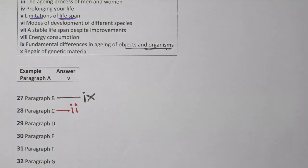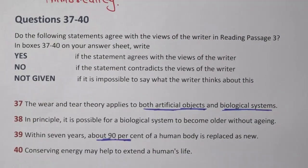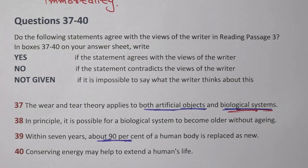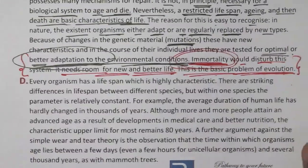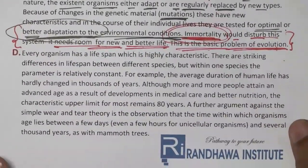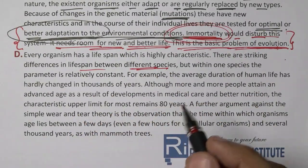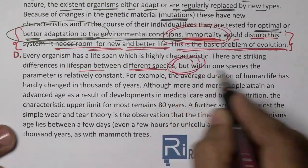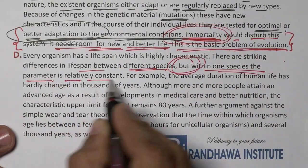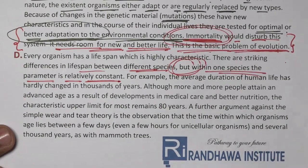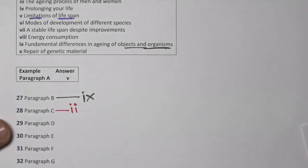Question 37: the wear and tear theory applies to both artificial objects and biological systems. Every organism has a lifespan which is highly characteristic. There are striking differences in lifespan between different species, but within one species the parameter is relatively constant. The heading check for paragraph D: the answer comes out to be the seventh one — a stable lifespan.